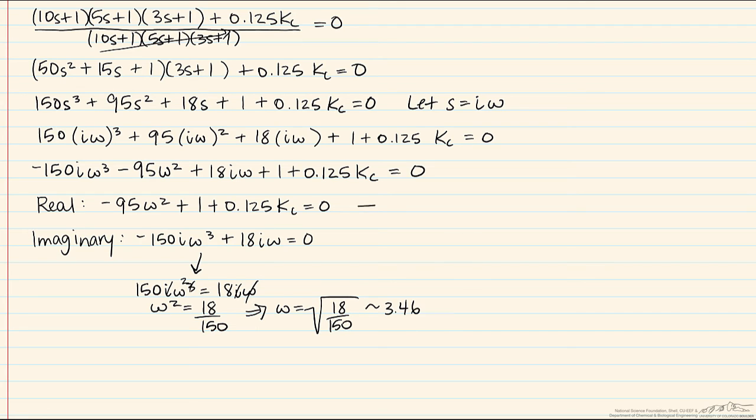Going back to the real equation, we can substitute in that value of omega squared. Kc equals 83.2. And this is the assessment of our ultimate gain.